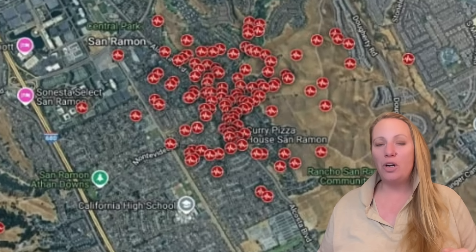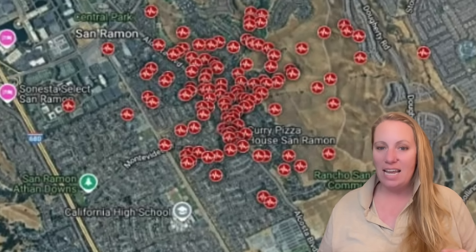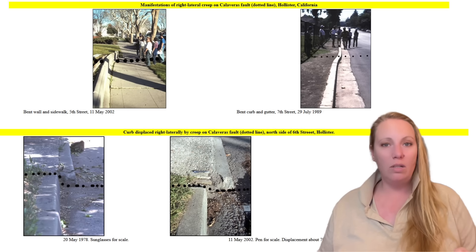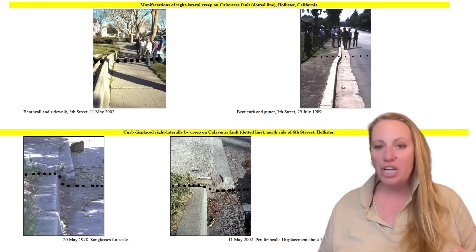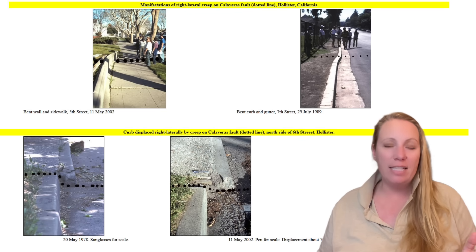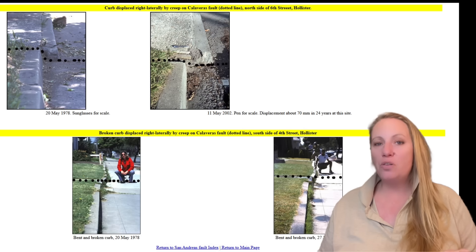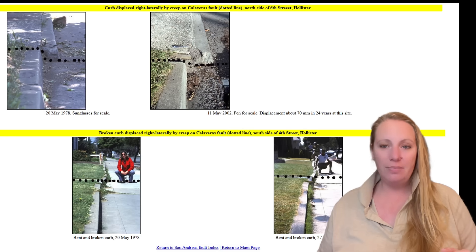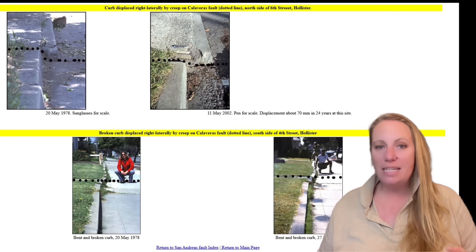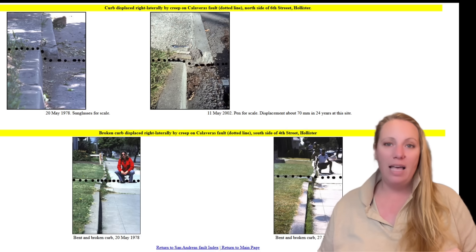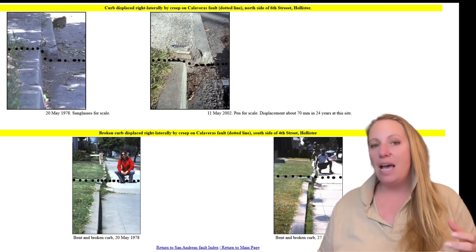That swarm behavior indicates local stress redistribution, minor slip transients, and changes in fluid pressure at depth. It does not automatically mean that something big is going to happen or that we should all be afraid. It does not mean that a large earthquake is imminent — but it also does not mean nothing. That's the problem.